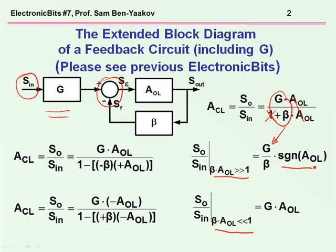We have to add the sign of the amplifier just to retain the polarity being an inverting or non-inverting amplifier. However, when beta A is smaller than one, it can be crossed out, and we end up with G times A open loop, which is shown here.